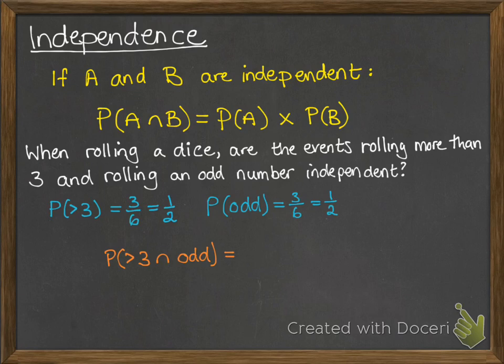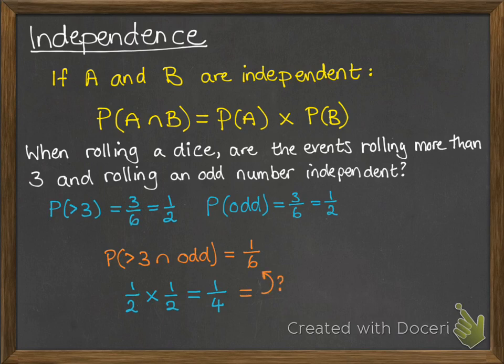The probability of getting greater than 3 intersection with odd — so that's both things satisfied at the same time. Numbers more than 3 and also odd — well there's only one of them, it's a 5 — so the chance of getting that is 1 out of 6. Now we check if that rule is true to see if they're independent. If we multiply a half by a half, we get a quarter — that's the probability of A times the probability of B. That gives a quarter, but it's not equal to 1 out of 6, so that rule doesn't hold and these events are not independent of each other.